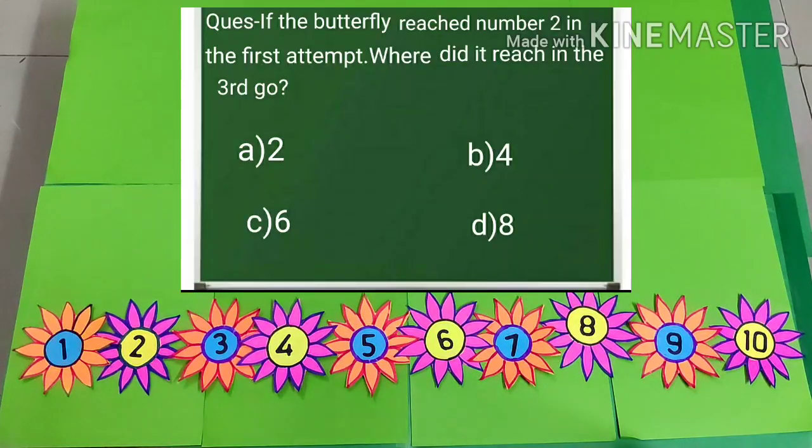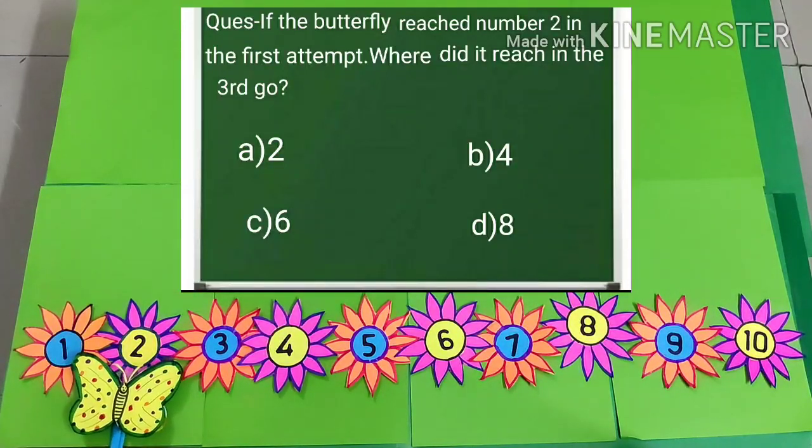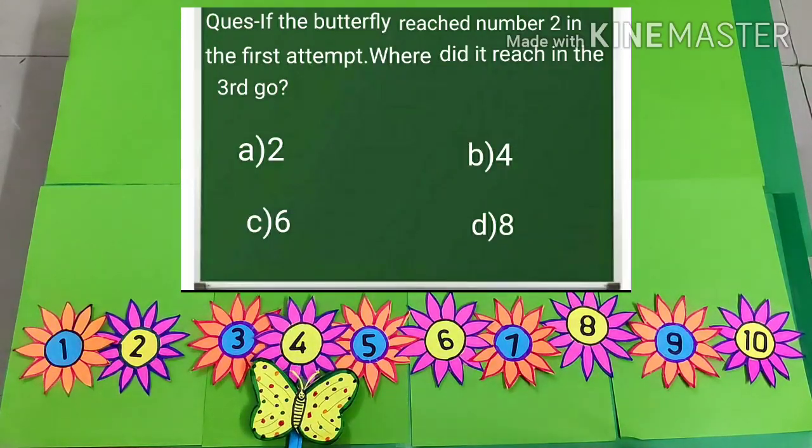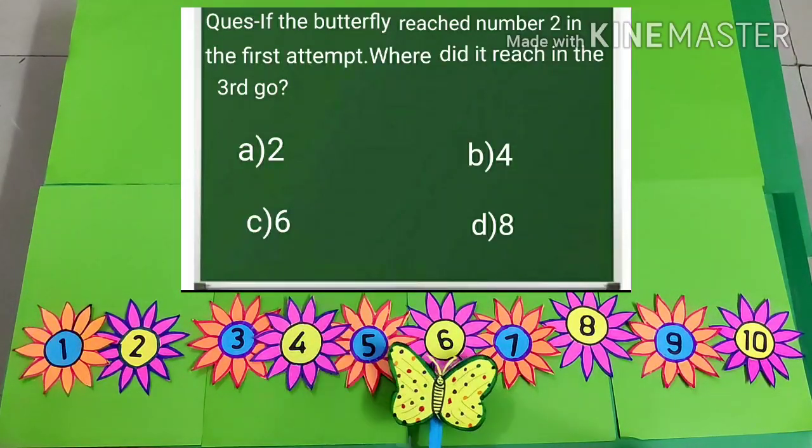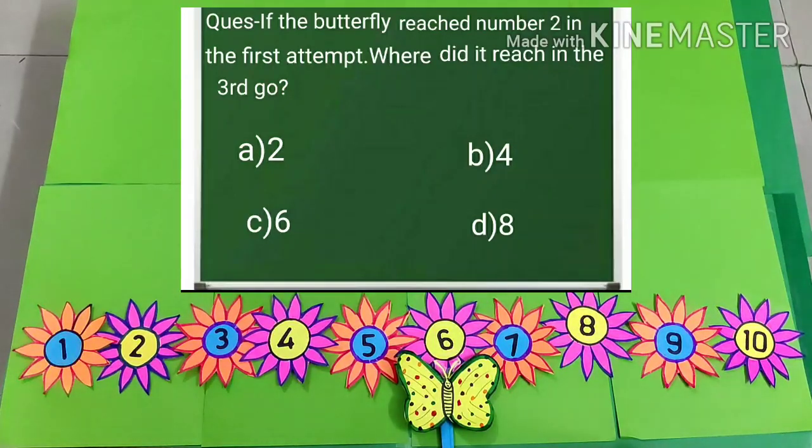Let us see. The butterfly reached number 2 in the first attempt, and the butterfly flies to number 4 in the second attempt, and in the third attempt the butterfly flies to number 6. So the butterfly reached number 6 in the third go. So kids, the answer is C: 6.